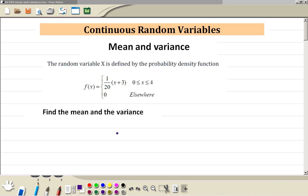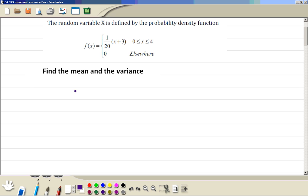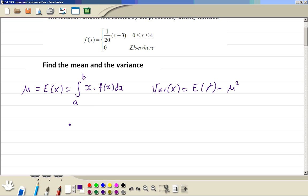Continuous random variable mean and variance, let's do this example. The formula for the mean, which is expected value of x, is equal to integration from lower limit to upper limit x times the probability density function. The formula for the variance is expected value of x squared minus the mean squared. So let us first find the mean.